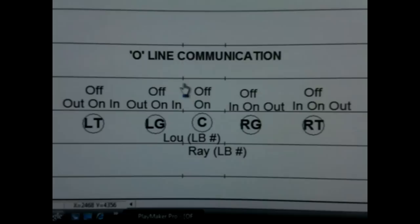The center has an 'on' call if there's a man on the line of scrimmage, head up — not in any shade — shoulder to shoulder. He doesn't worry about shades; that's handled by the guards. His other call is an 'off' call if he has a linebacker lined up on him but off the line of scrimmage. We always use words that mean something: a man on him or a man off him. The key for the center is he must also make a 'loo' call to the left or a 'ray' call to the right to identify the middle linebacker.